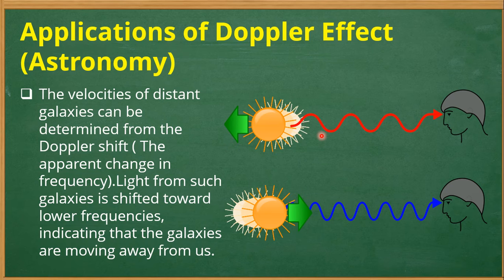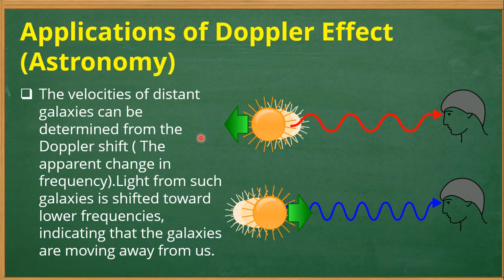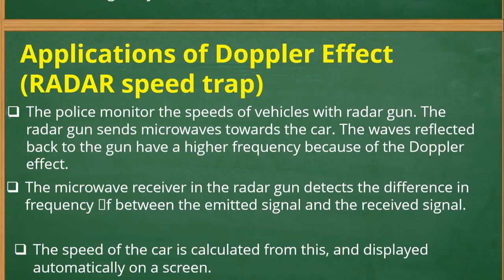When a star moves toward the observer on Earth, we observe a blue shift — an apparent increase in frequency. Light from a receding galaxy is shifted towards lower frequencies, indicating that the galaxies are moving away from us. Using this principle, astronomers can determine the velocity of galaxies using the Doppler effect.